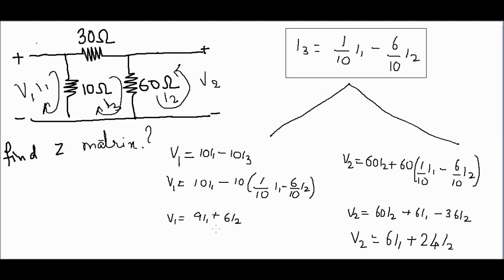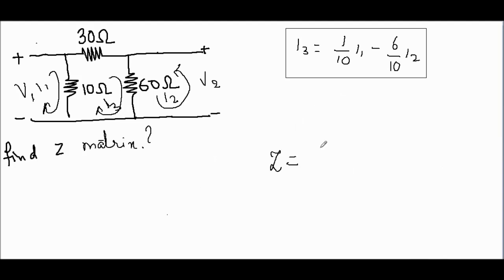From these equations, we can identify Z11, Z12, Z21, and Z22. Writing in matrix form, our impedance matrix will be: Z = [[9, 6], [6, 24]].